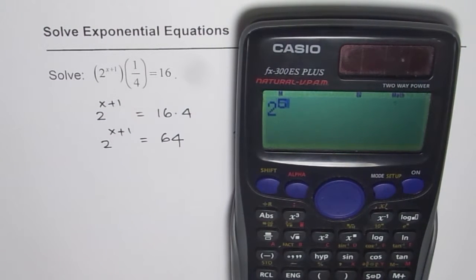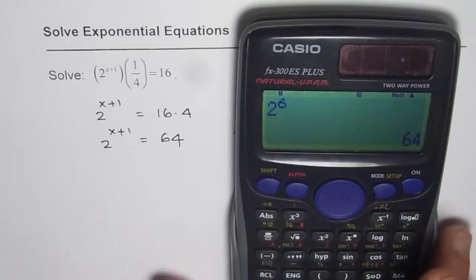2 to the power of, let's say 5 is how much? 32. So 2 to the power of let's say 6 is how much? 64. So you get your answer.